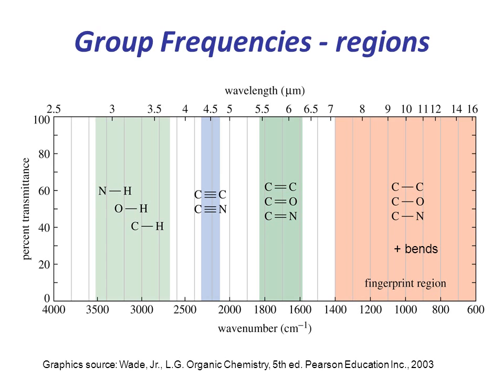For example, a sharp band around 2,200 to 2,400 wave numbers would indicate the possible presence of a C-N or C-C triple bond.